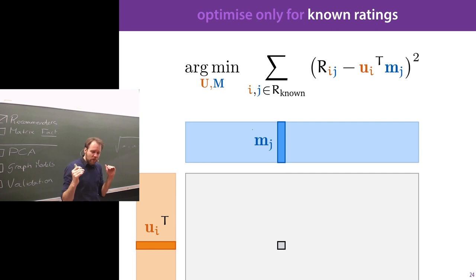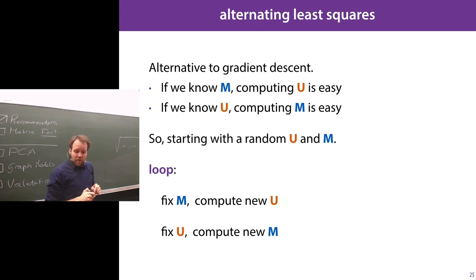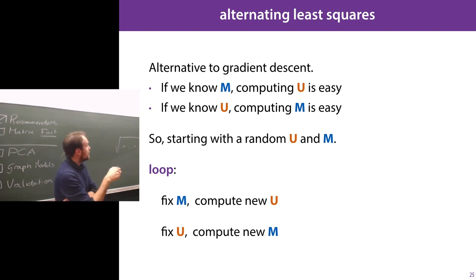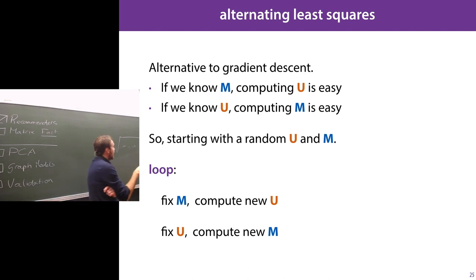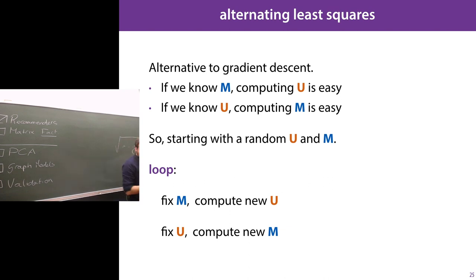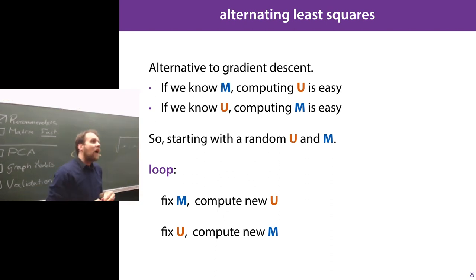So how do we solve this? We have a loss function — how do we optimize it? Obviously we can do gradient descent, which we'll look at in a bit. But there is also a slightly more direct way: the problem itself is not convex, so it's difficult, but it's biconvex — meaning if you know M, then computing U has a closed-form solution, and if you know U then computing M is very easy. So we can use alternating optimization — which we've seen in k-means and the EM algorithm — where we start with a random U and M, fix M and compute the optimal U for that M, then fix U and compute the optimal M. That's called alternating least squares.